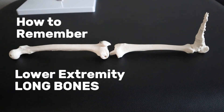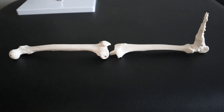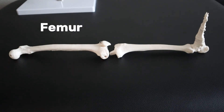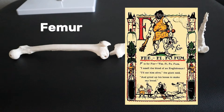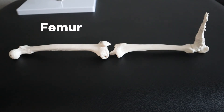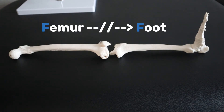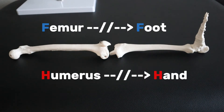We're covering lower extremity long bones. The first long bone we come across is the femur, known as the biggest bone in the body. I remember this with the line 'fee-fi-fo-fum' from the giant in Jack and the Beanstalk — 'fee' for femur, and giant since it's the biggest bone. If you're having trouble differentiating the humerus and the femur because they look similar, remember the femur eventually connects to the foot while the humerus connects to the hand.